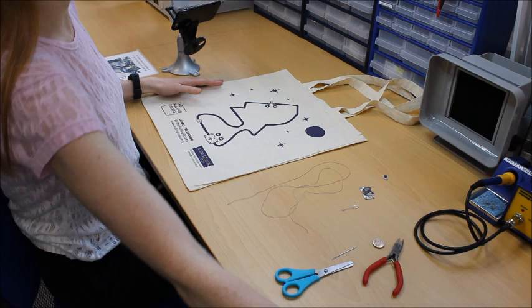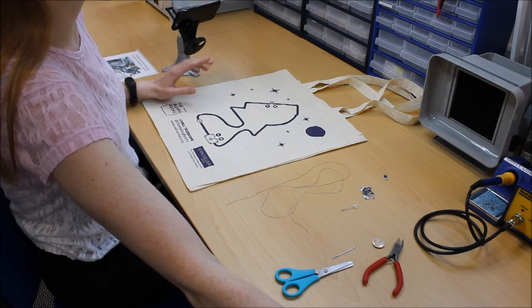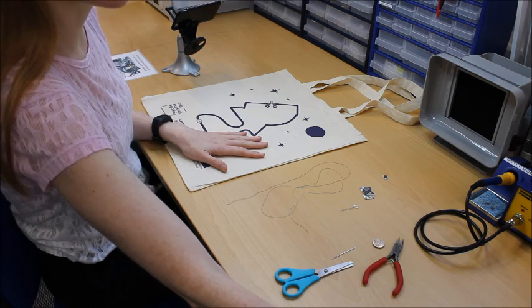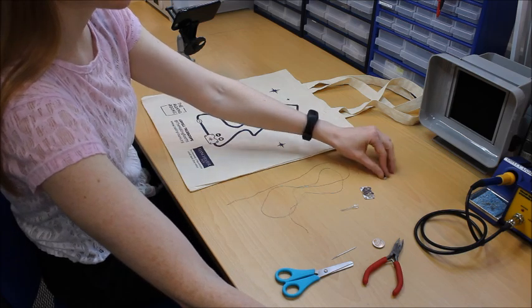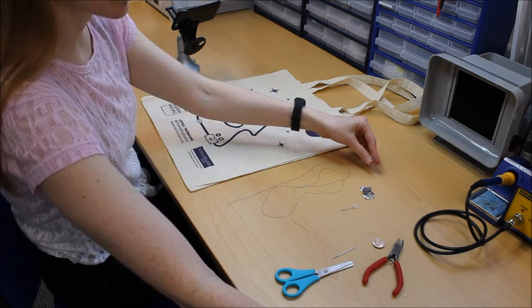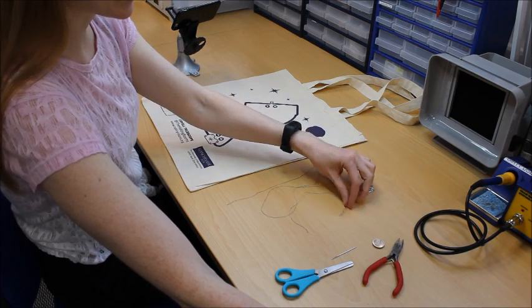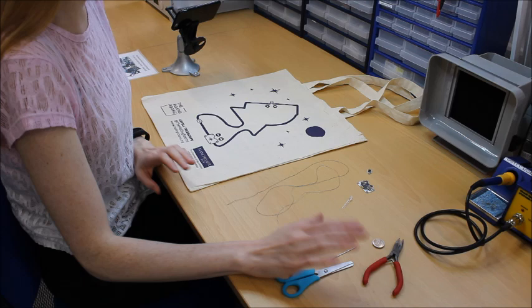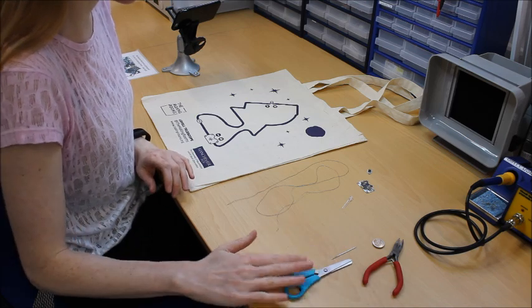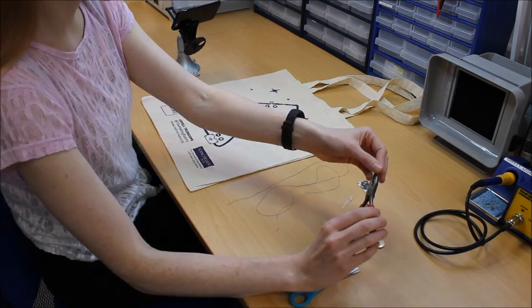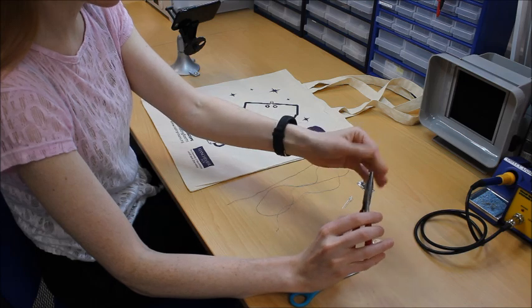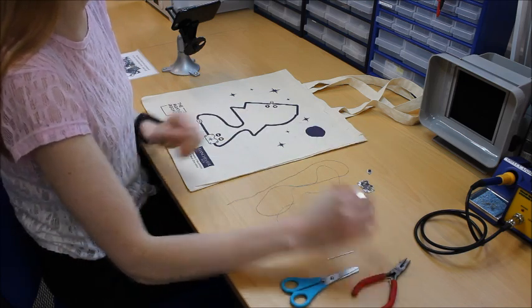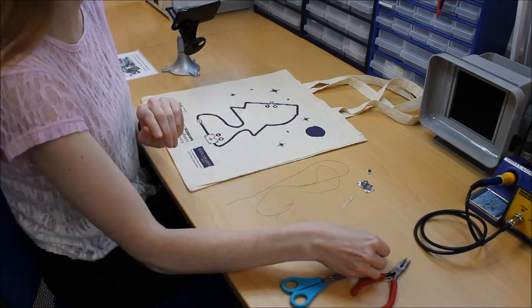So you will need some things. Some stuff comes in your pack: the tote bag, a little switch, a battery holder, an LED, and the conductive thread itself. The tools you'll have to collect for yourself are scissors, pliers with small ends, a needle, and a little coin battery. This one is a 3 volt coin battery.